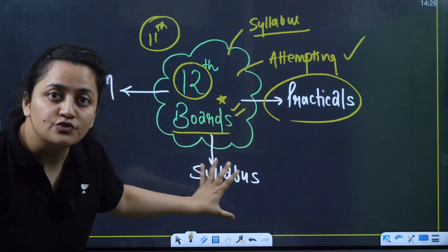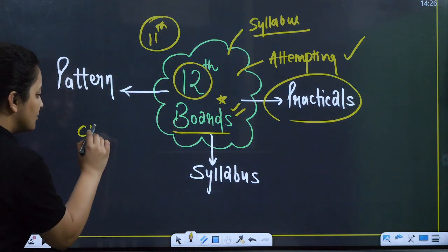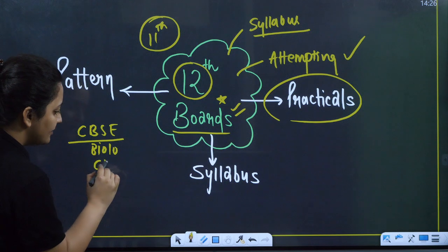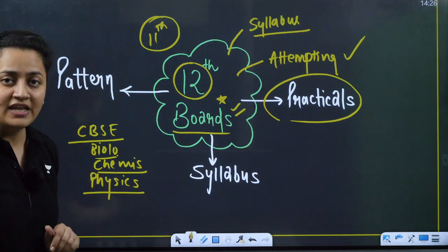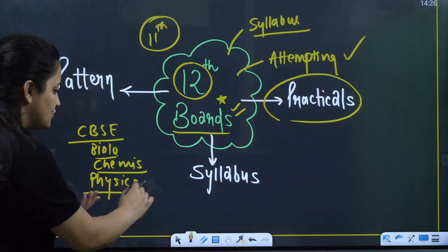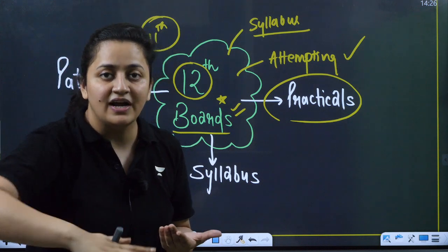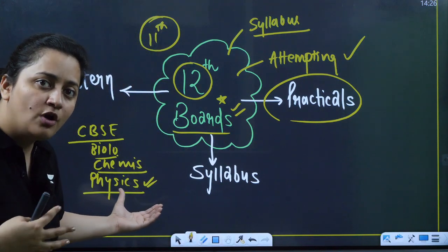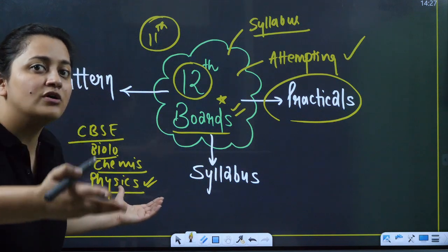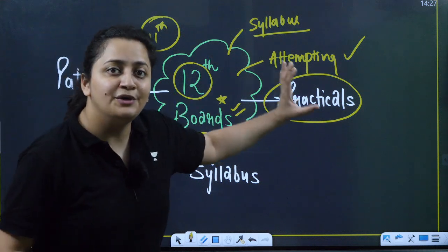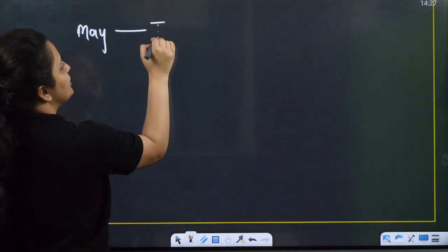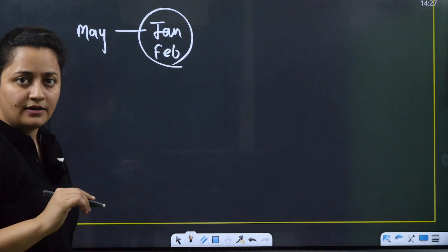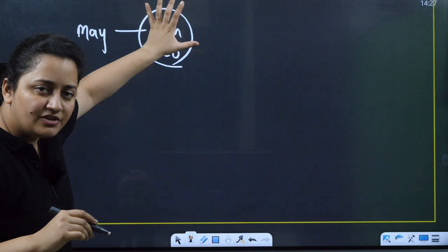For biology and chemistry, there's no major difference between board exams and NEET. For physics, it is mainly the pattern — in boards you may need to derive expressions, so you need to learn derivations as well as practice MCQs. This is the only real difference. Ideally, complete your entire syllabus by January or February.